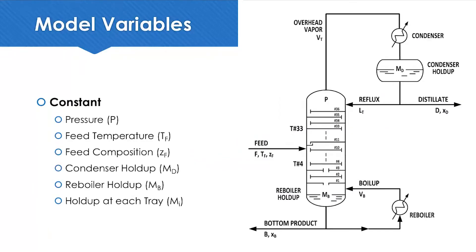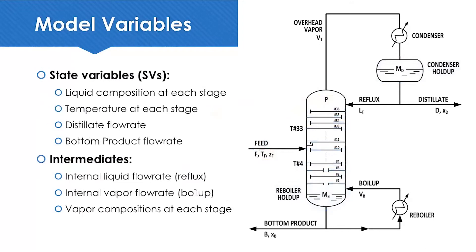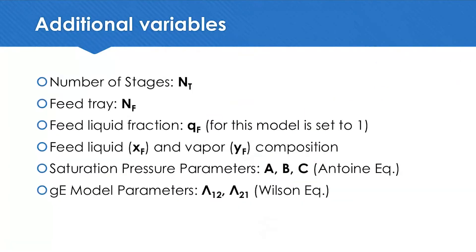Now presenting the model variables. The constants are the pressure, the feed temperature and composition, condenser holdup, reboiler holdup, and holdup at each tray. The variables that the model will calculate are liquid composition at each stage, temperature at each stage, distillate flow rate, bottom product flow rate, internal liquid flow, internal vapor flow, and vapor compositions at each stage. Additional variables are the number of stages, the feed tray, the feed liquid fraction, feed liquid and vapor composition, saturation pressure parameters from the Antoine equation, and excess Gibbs model parameters.